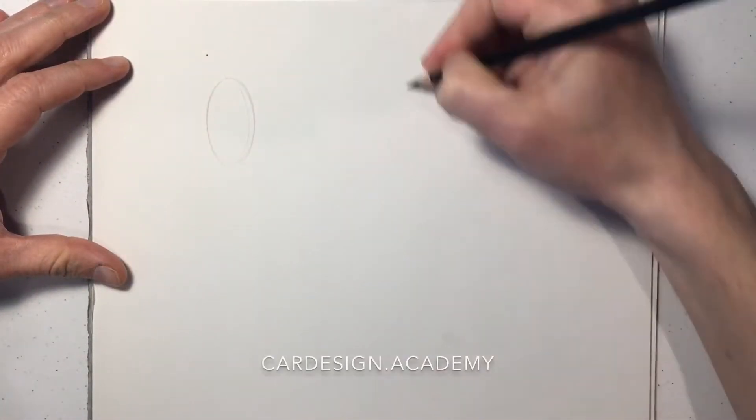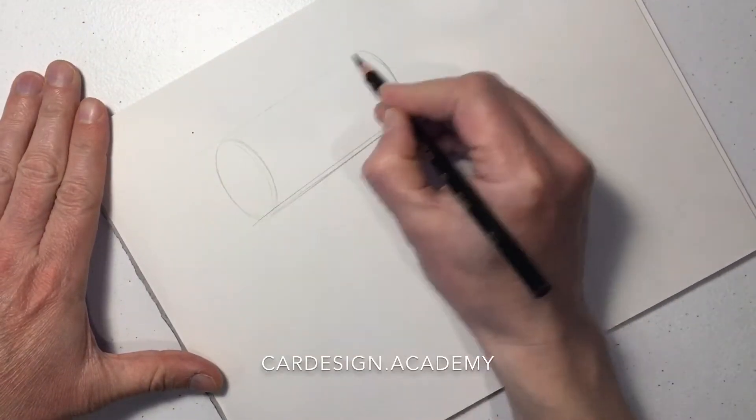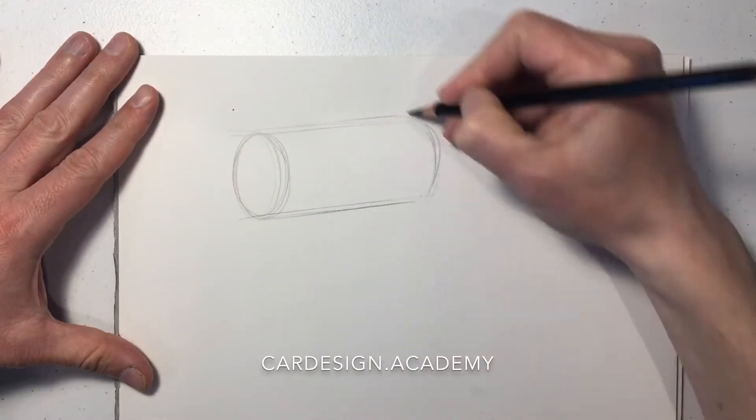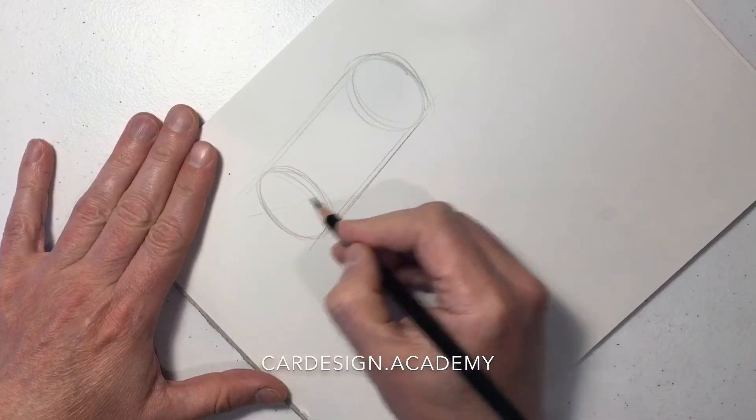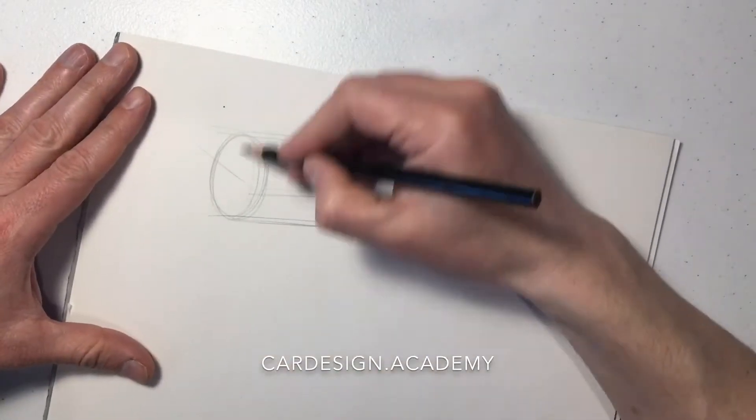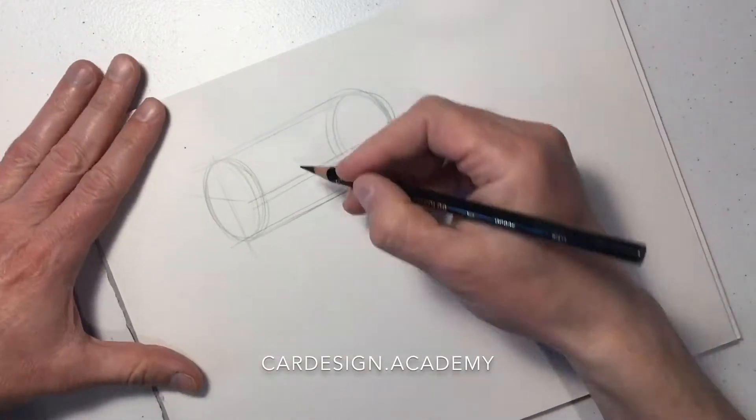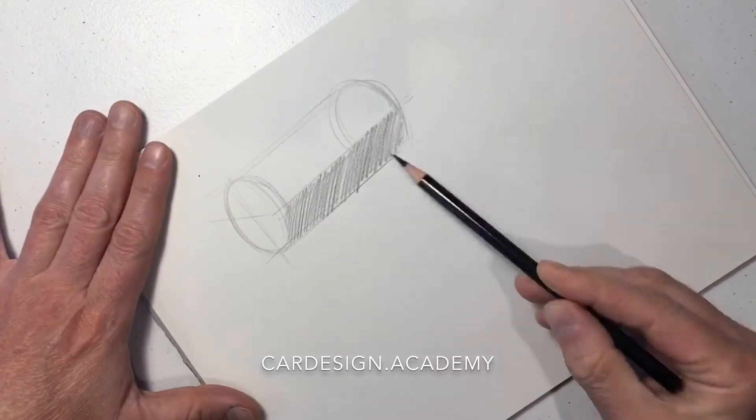Today we're going to start learning about reflections and how to draw reflective surfaces. We're going to start with a simple shape like a cylinder because that's the simplest expression of an automotive body side. The bottom half of the cylinder is being rendered dark, and that represents a reflection of the ground leading up to the horizon line.